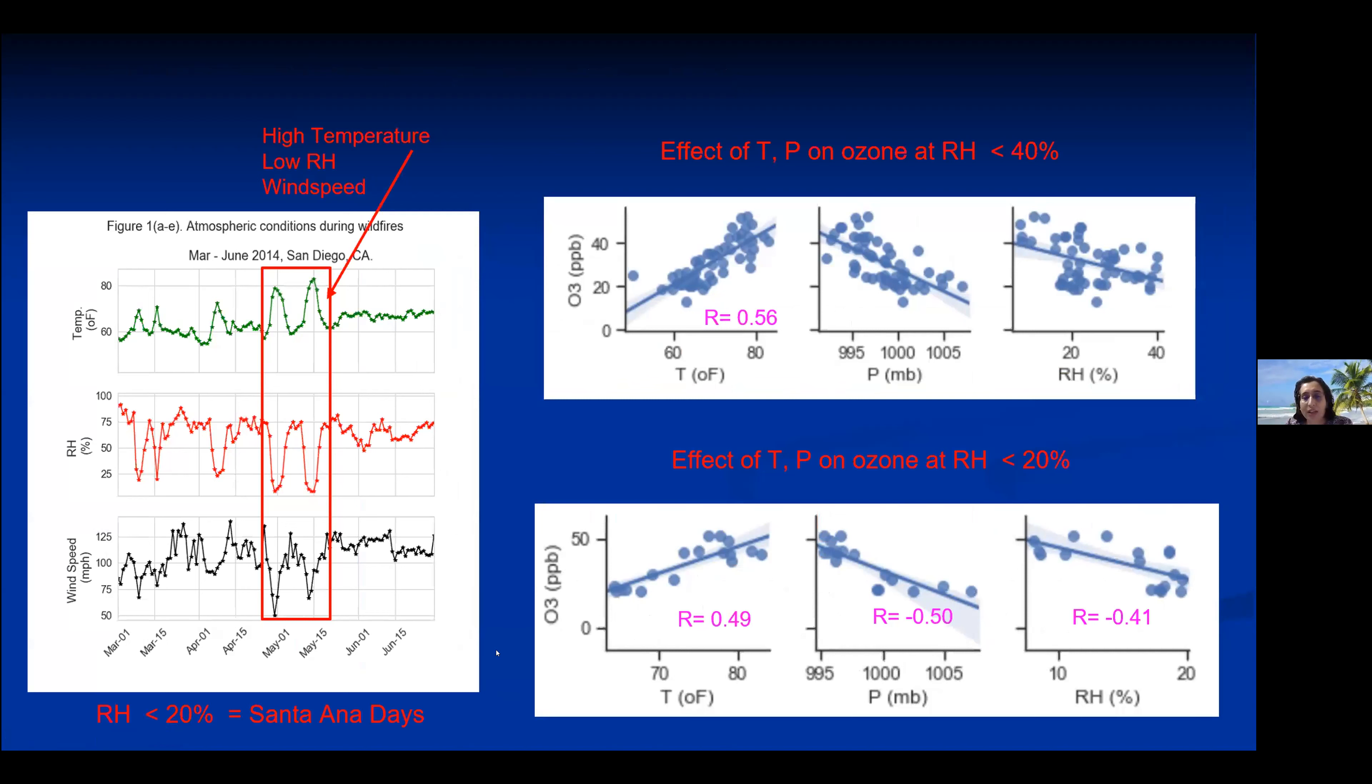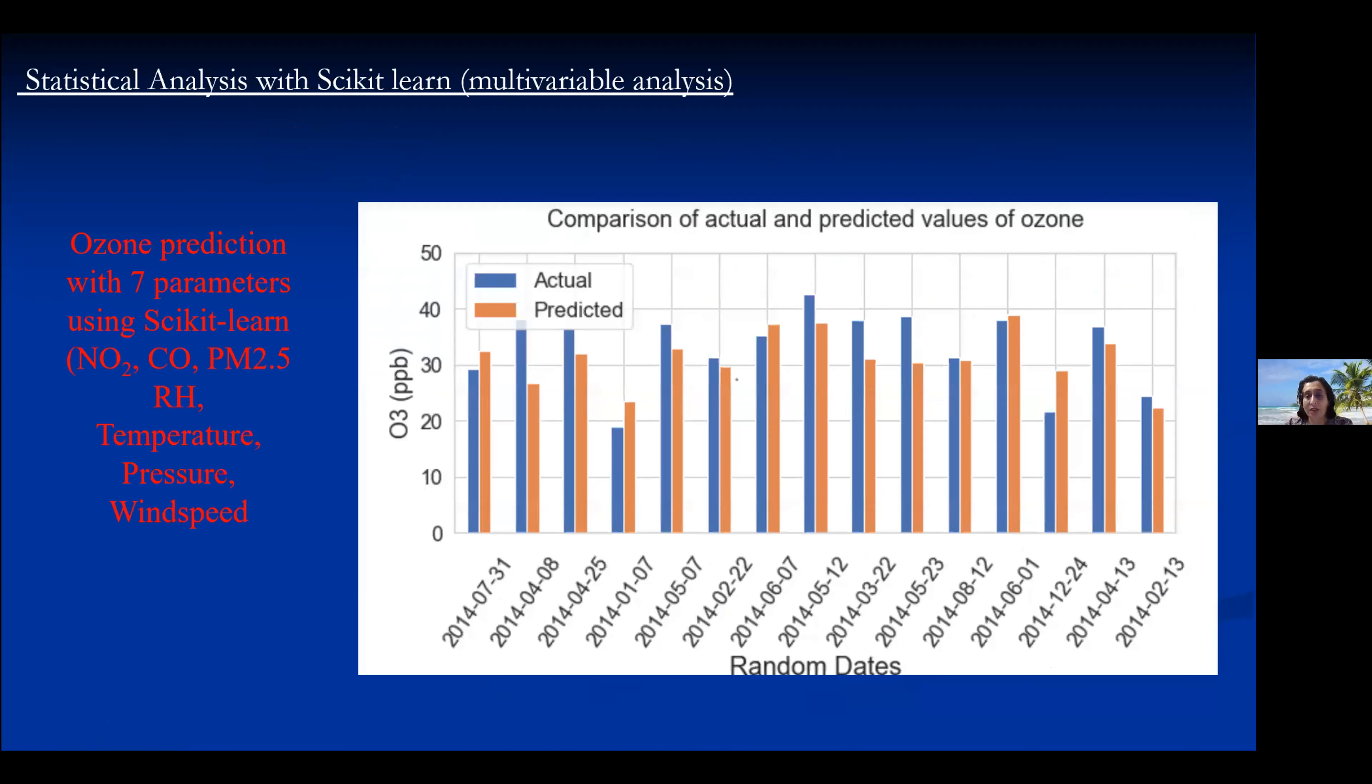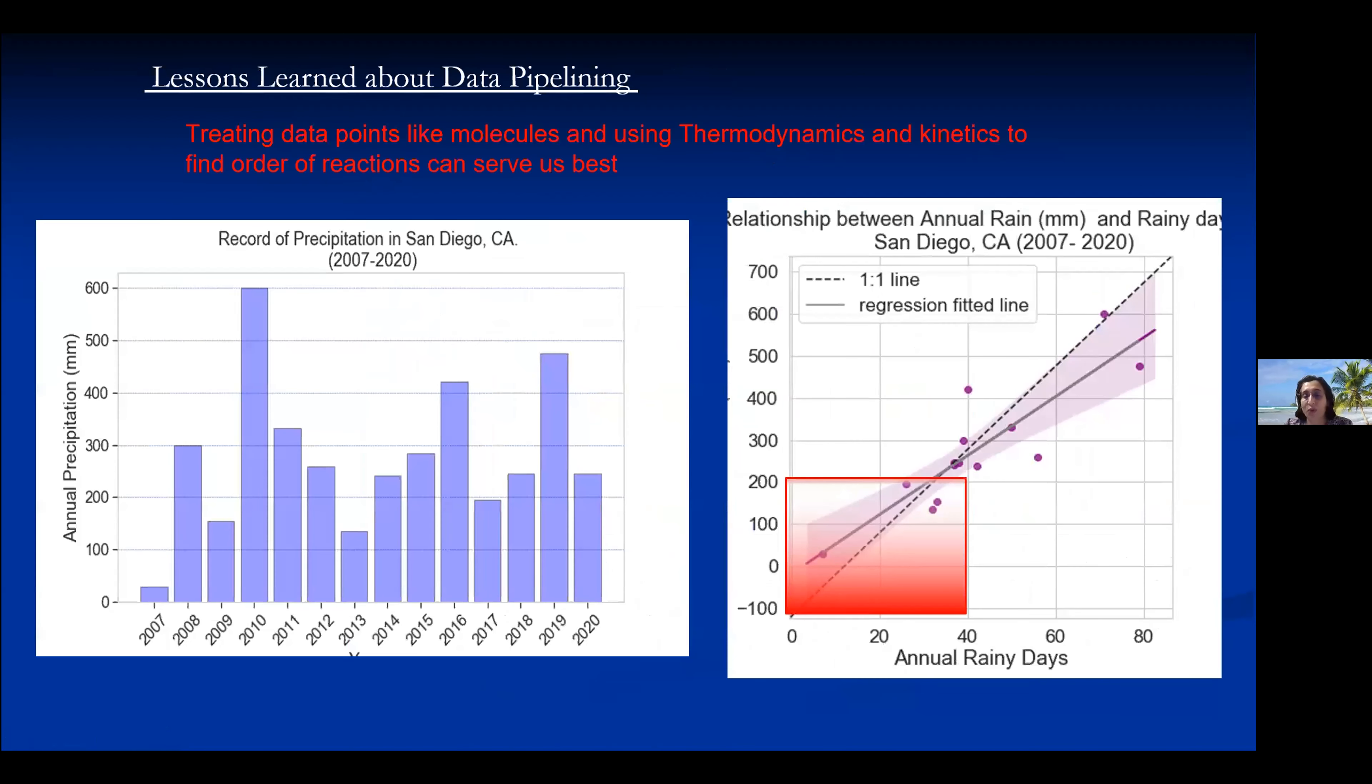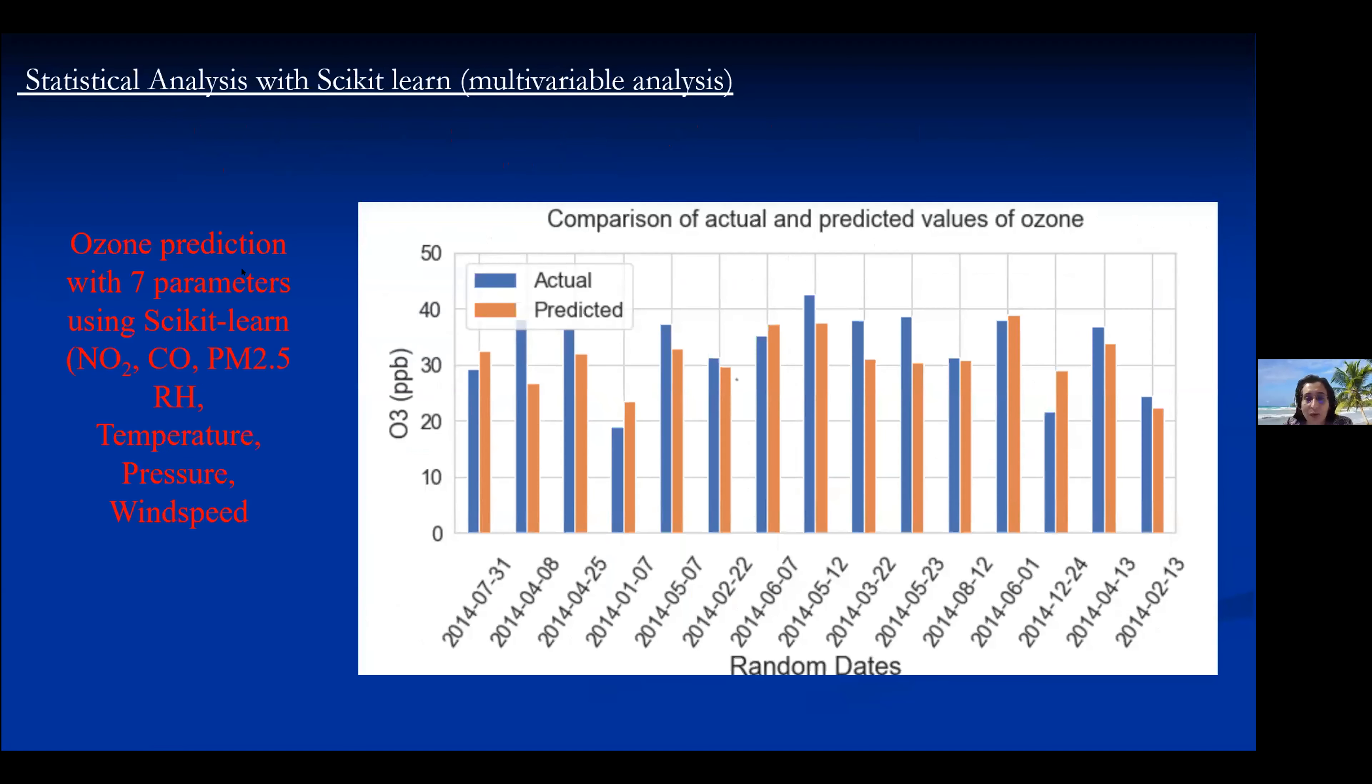But if we compare it back with the other quadratic equation you see the difference between 20 to 30 ppb. And here if we go to our predictive model it's only five to maximum eight ppb. And so I think according to the atmospheric chemistry this is really a great accomplishment because you cannot predict ozone simply with the few variables. It depends on the solar intensity and other parameters as well.